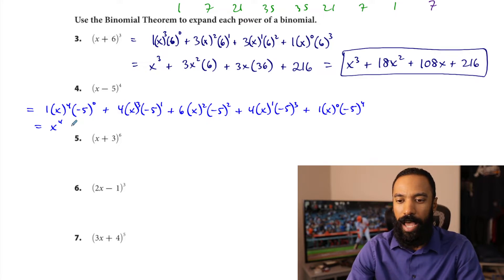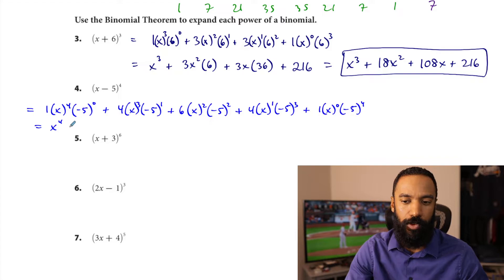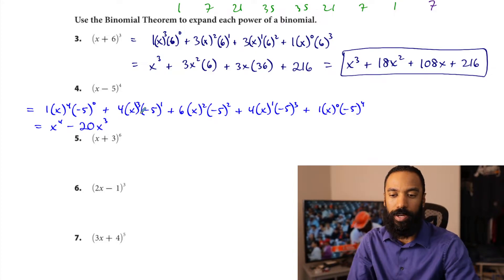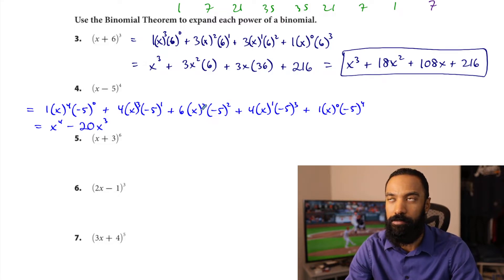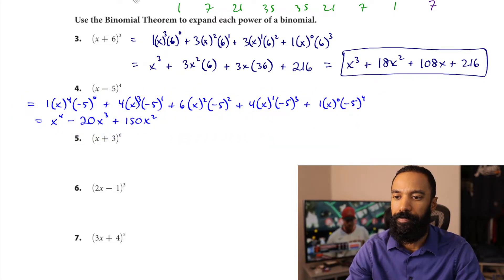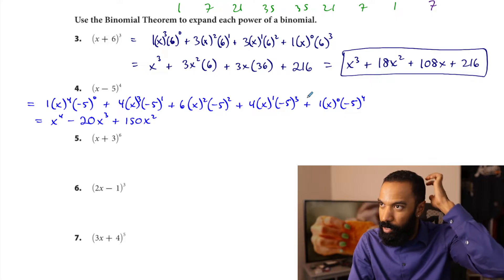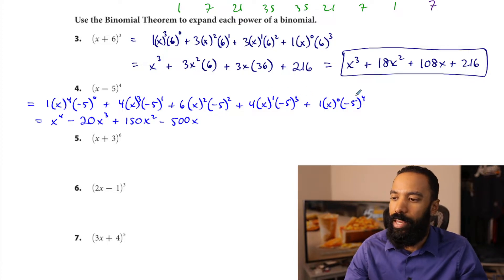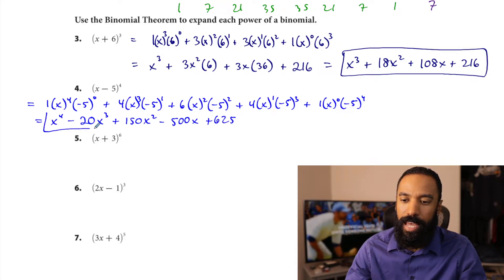Negative 5 squared is 25, and 25 times 6 is 150, so plus 150x squared. Negative 5 cubed is negative 125, times 4 is negative 500, so minus 500x. Negative 5 to the fourth is positive 625, so plus 625. And that's the result: x to the fourth minus 20x cubed plus 150x squared minus 500x plus 625.